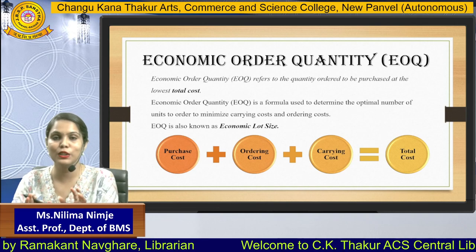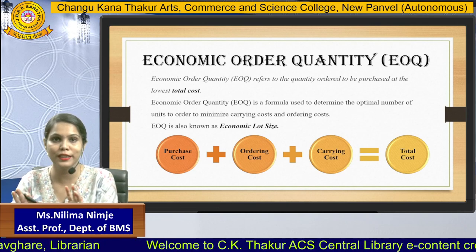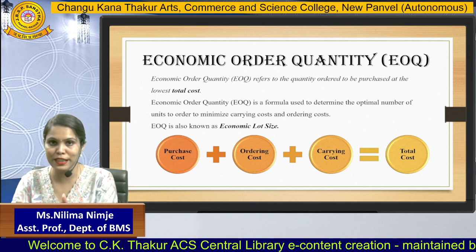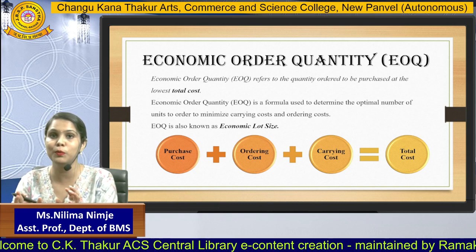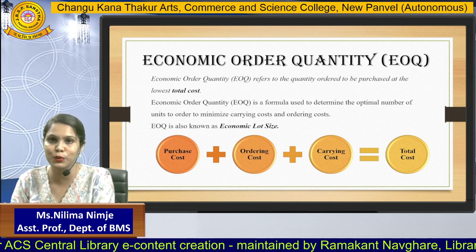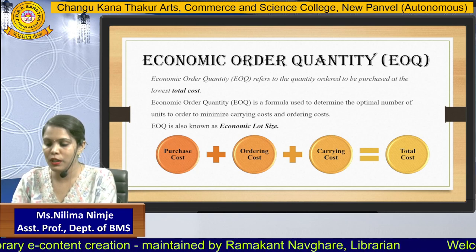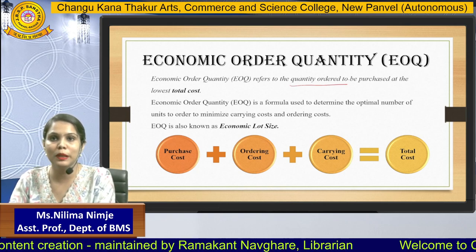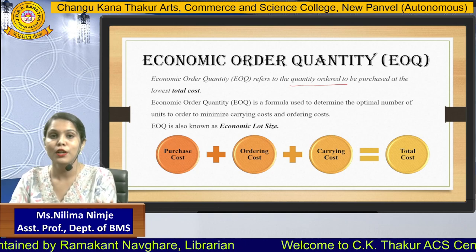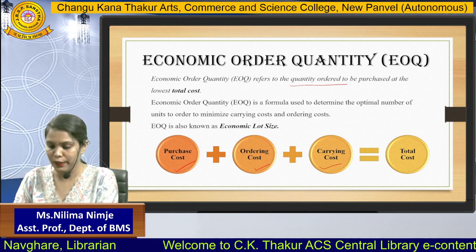Economic Order Quantity means the quantity that you are going to purchase. Whatever quantity you are going to purchase, it should be economical, it should be feasible, it should be optimal enough that you are purchasing that quantity at a completely lowest cost. So Economic Order Quantity refers to the quantity ordered to be purchased at the lowest total cost. Now, total cost is the combination of purchase cost, ordering cost, and carrying cost.